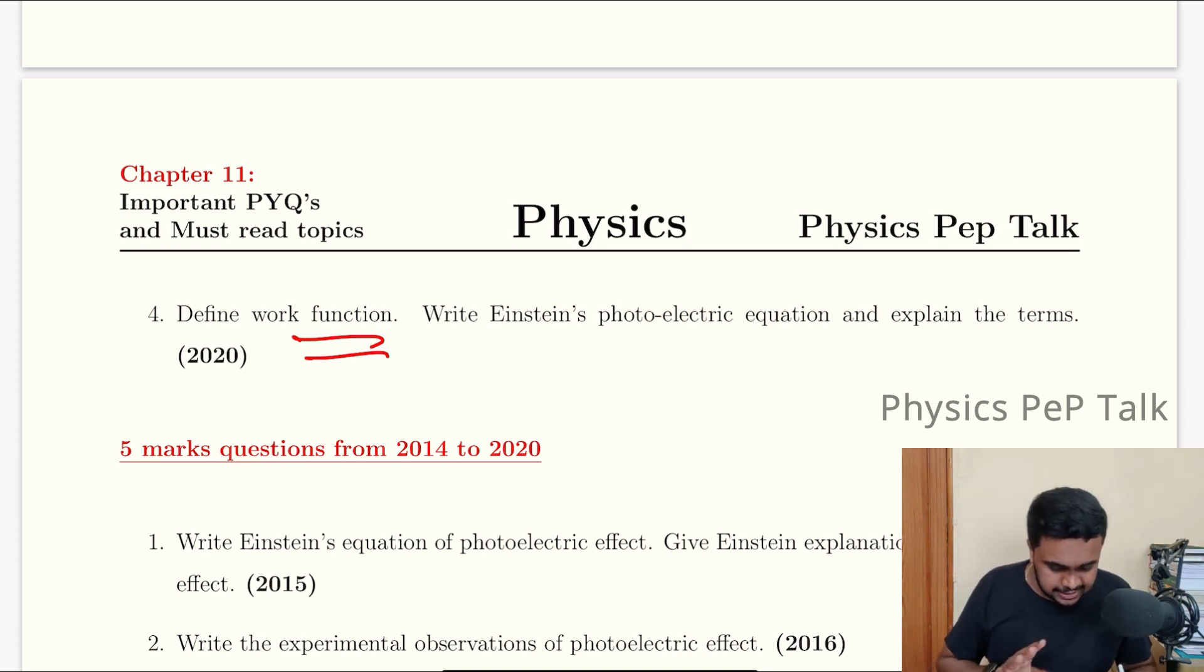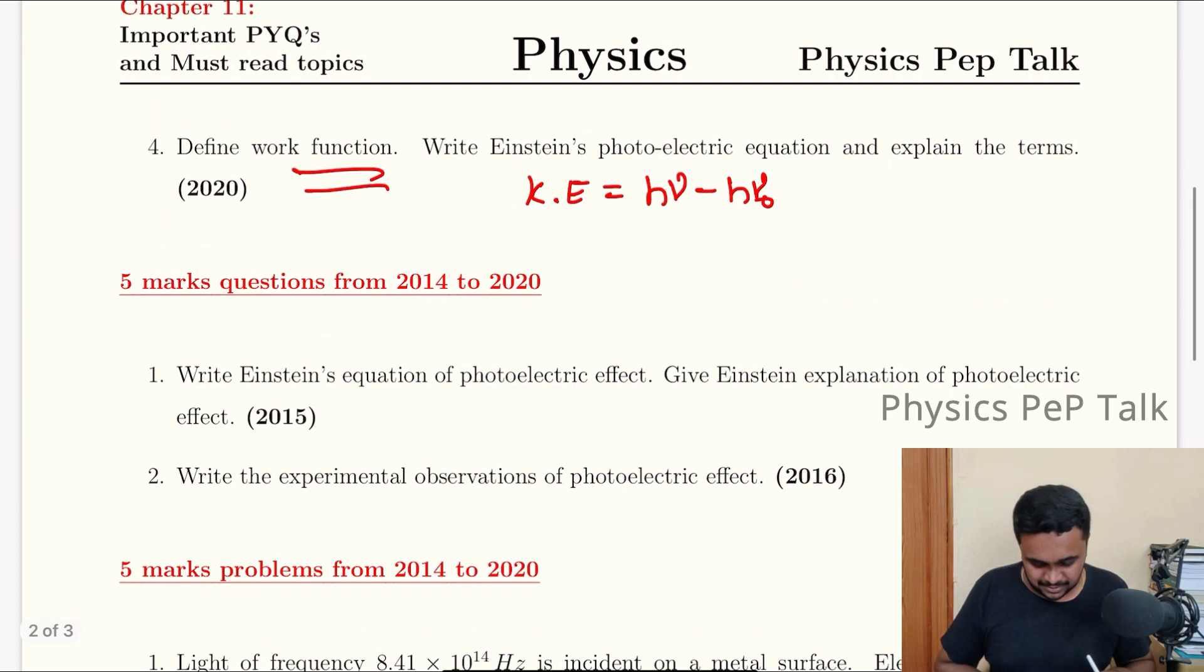Write Einstein's photoelectric equation and explain the terms. Kinetic energy of the emitted photo electrons will be equal to the energy of the incident photon minus the work function. Explain this and you'll get marks.